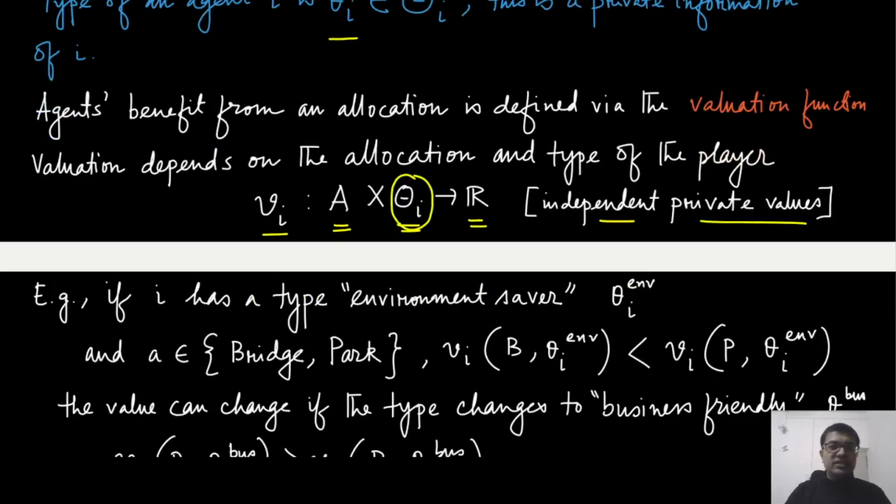Now how can we relate to this valuation? Let us look at the first example that is a public good. Let us say the allocation space consists of only two possibilities, either building a bridge or building a park. Now let us say player i has a type of environment saver, so it cares for the environment. In that case, if the final outcome is to build a bridge, then this player might not like it. So V_i of B, given that its type is theta_i environment, it will prefer that less than the park because park will help the environment better. Therefore, the valuation for player i will be larger in that outcome. You can relate to this valuation as the satisfaction or happiness that player i gets.